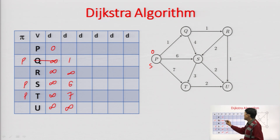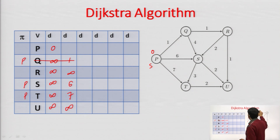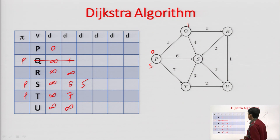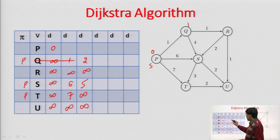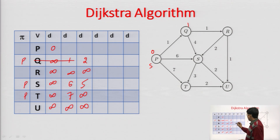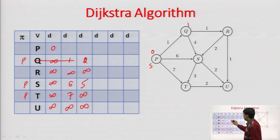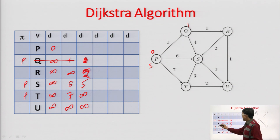After this, we delete the minimum, which is Q (distance 1). From Q, edges go to S and R. Q to S: Q's cost is 1, plus 4 = 5, so we update S from 6 to 5. Q to R: 1 plus 1 = 2. No other updates are needed. The predecessors of S and R that we updated now become Q. Then we delete the next minimum, which is R (distance 2). From R, edge to S: 2 plus 2 = 4, update S. Edge to U: R's distance 2 plus 1 = 3. Update predecessors of those vertices to R.